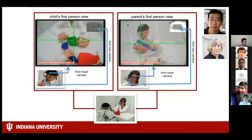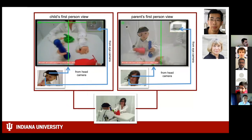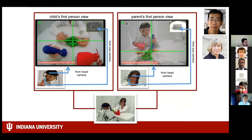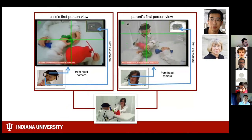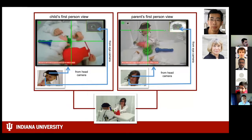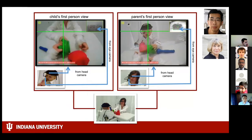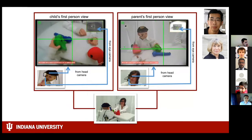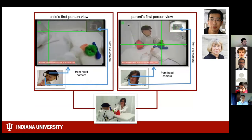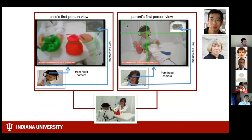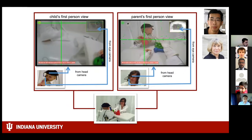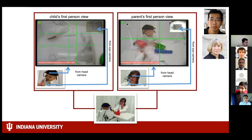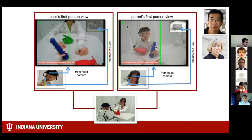Once you have cameras mounted on kids and parents, the data you can collect is very rich. Here is a parent and child playing in the lab with toys. You can see synchronized on the left the child's first-person view with eye gaze tracking, and on the right the parent's first-person view with eye gaze tracking. You get very fine-grained, moment-by-moment information about what everyone was attending to and looking at.